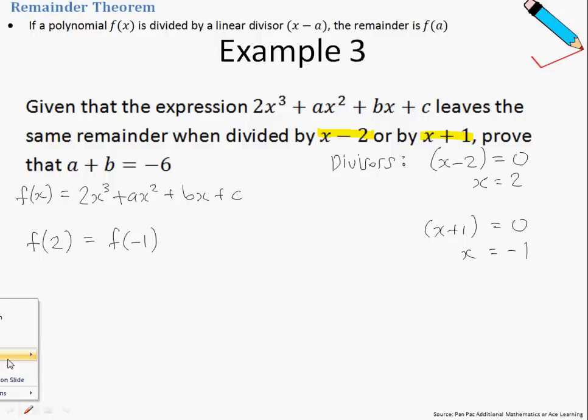Now, why is this so? Because the question says that the expression leaves the same remainder when being divided by x-2 or by x+1. Probably the key learning point in this example is that f(2)=f(-1) because of the highlighted fact.